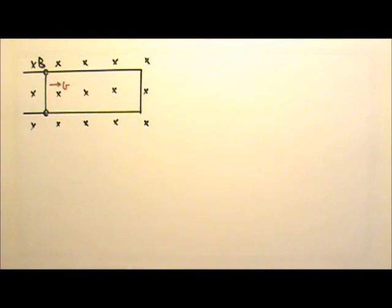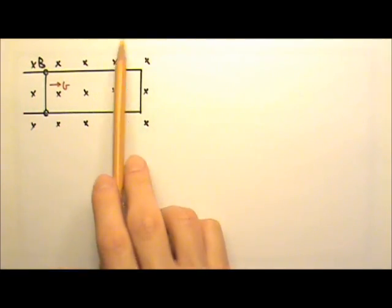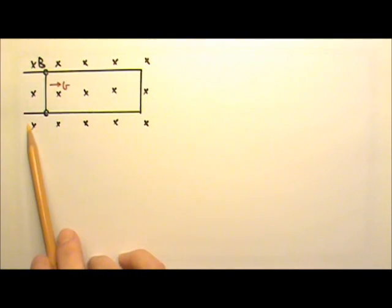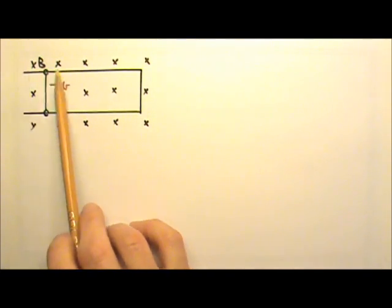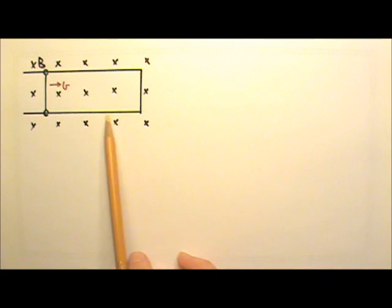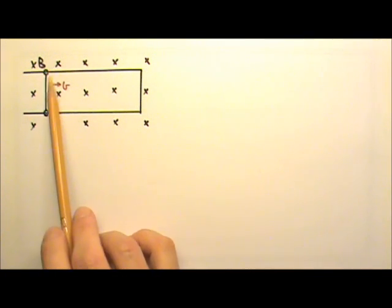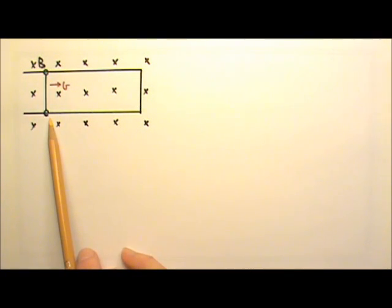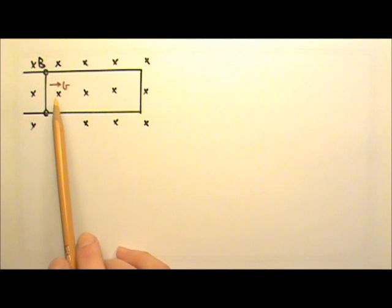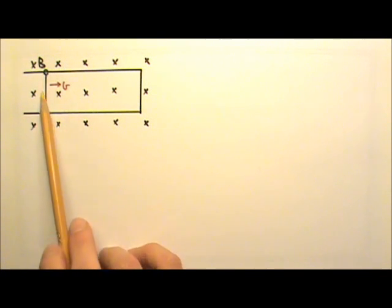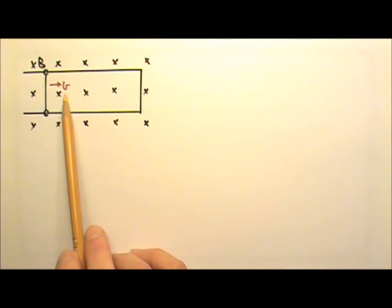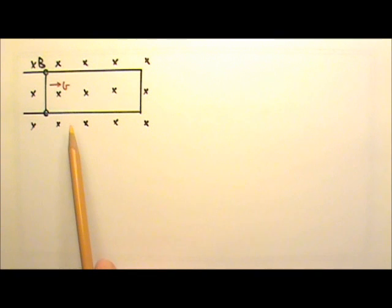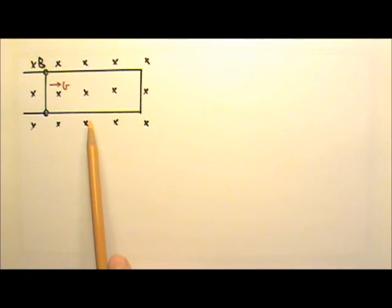Now let's try another scenario. We have a uniform magnetic field here, and there is a wire rail with a conducting bar riding on the rail. The conducting bar is pulled to the right at speed V. Find the direction of the induced current, if there is any, in the loop.